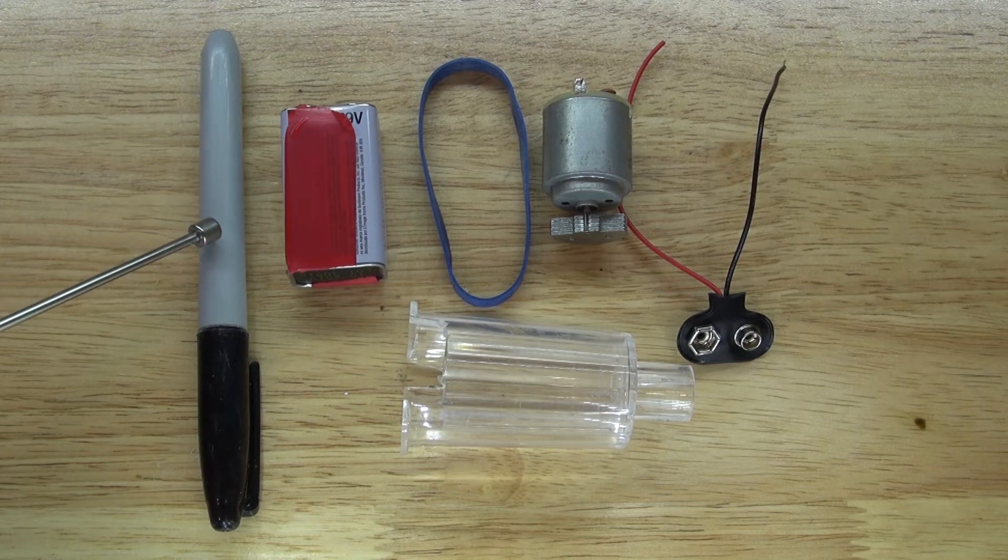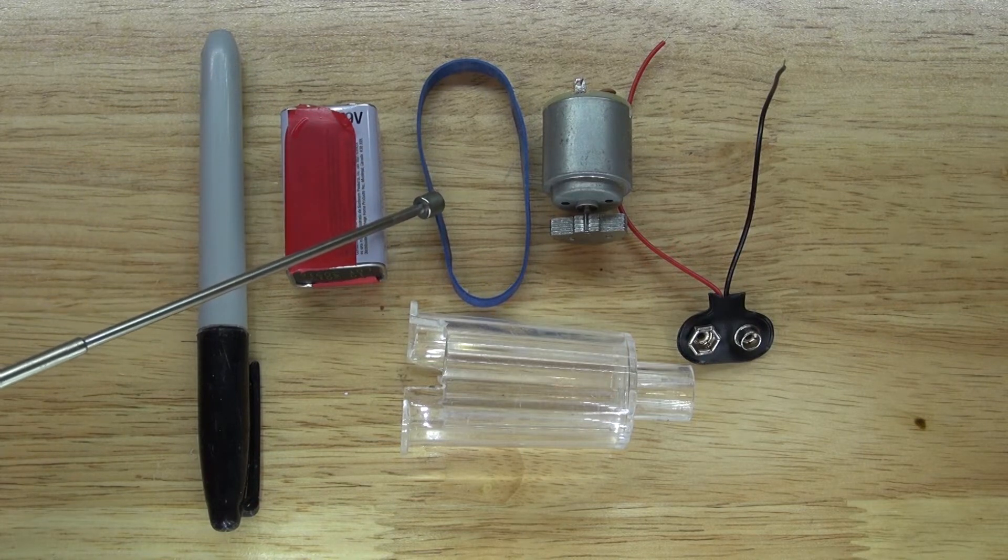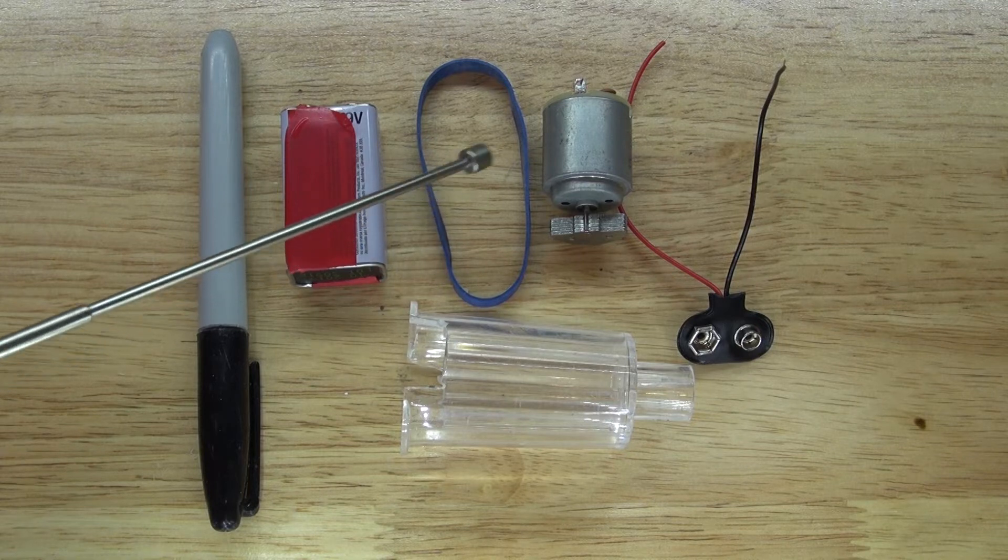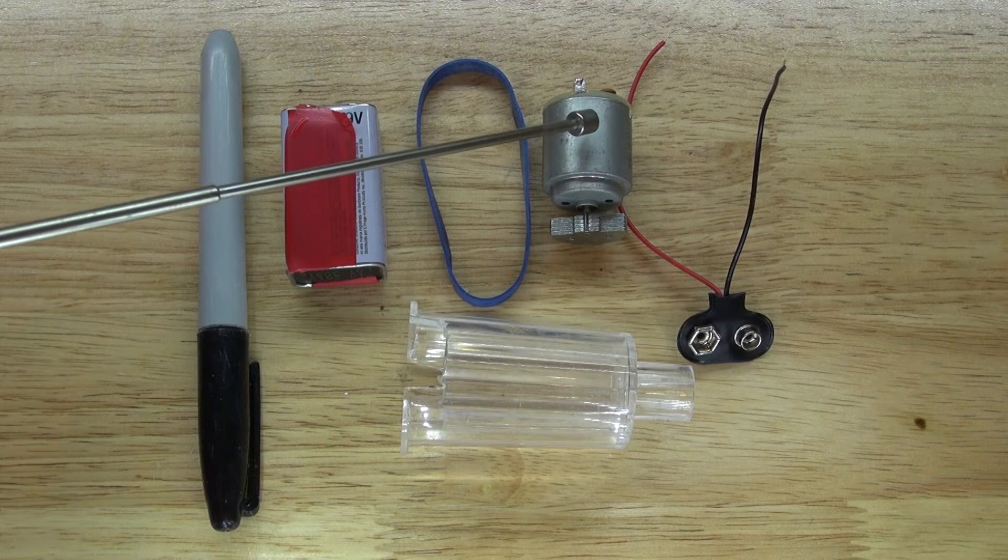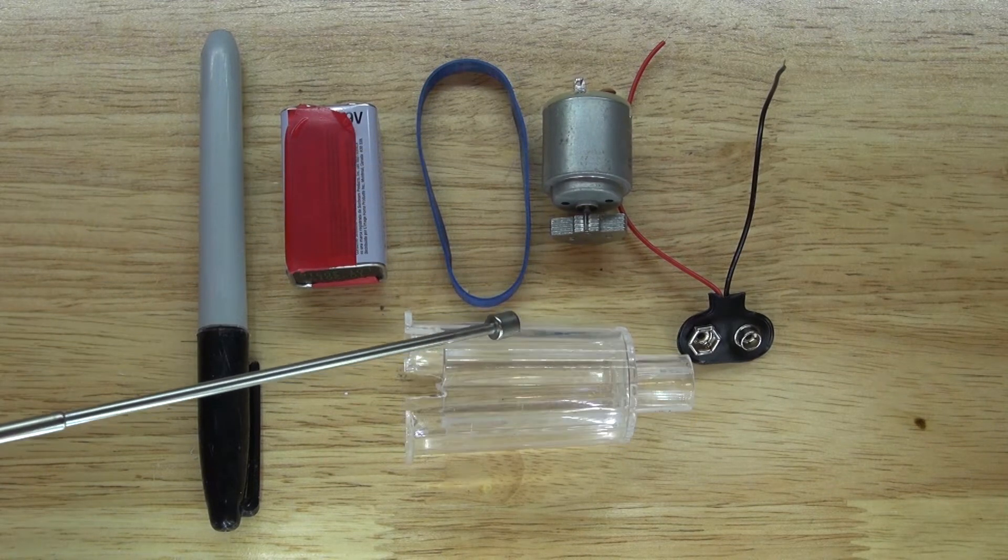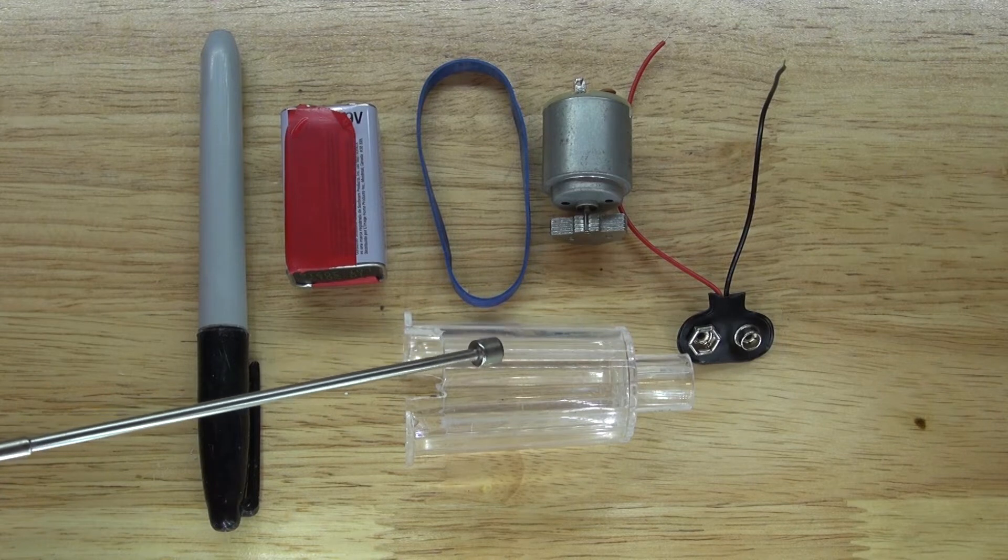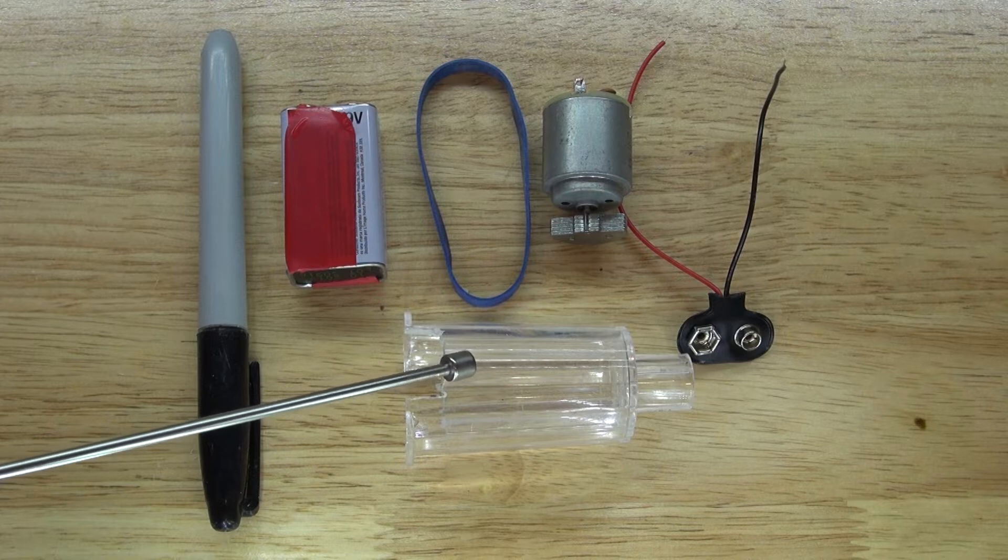You'll need a Sharpie, a 9V battery, a rubber band, a 9V battery holder, a really strong vibrating DC motor, and for the housing, I got this from a solar-powered garden light. You can use this and it's the right size to be able to make this project.